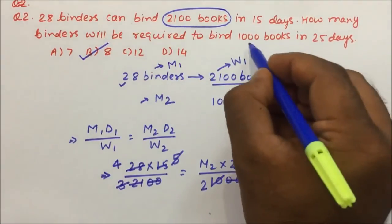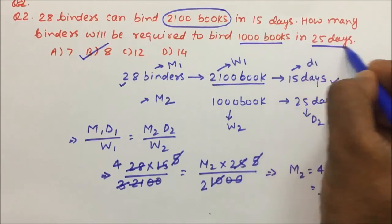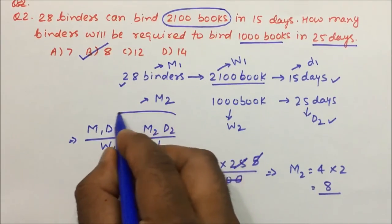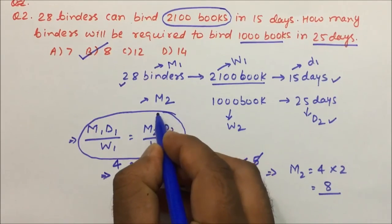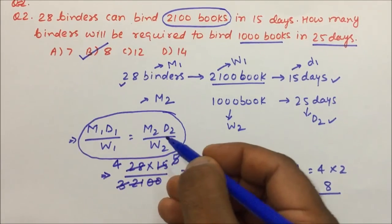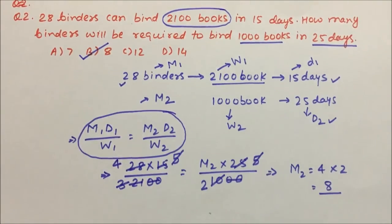So M2 will become 4 into 2, which is 8. So 8 binders are required to bind 1000 books in 25 days. So that is one very simple formula: M1*D1/W1 equals M2*D2/W2. This alone we have to remember. Thanks for watching the video.